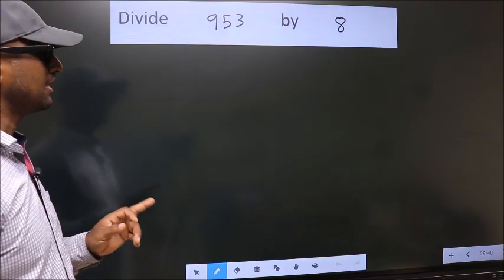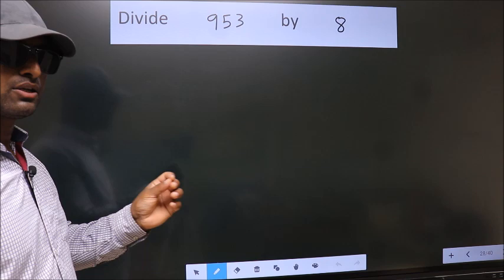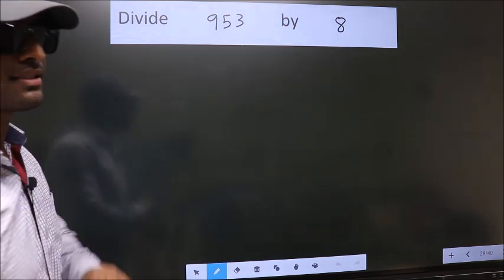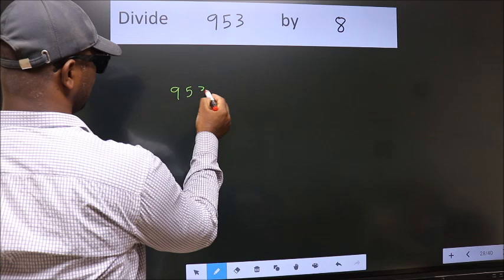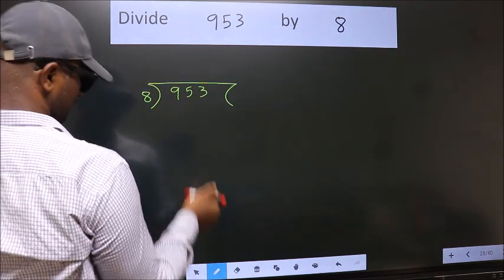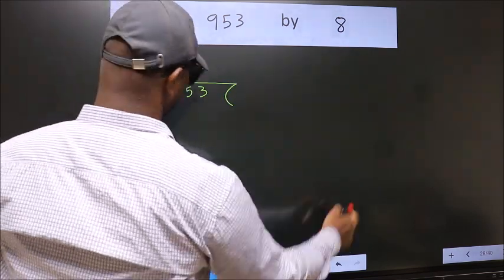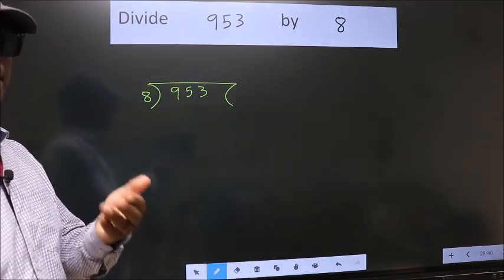Divide 953 by 8. To do this division we should frame it in this way. 953 here, 8 here. This is your step 1. Next.